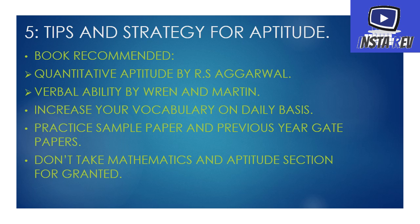For aptitude, the first important book for quantitative aptitude is R.S. Aggarwal. Go through previous year papers to get an idea, then pick up R.S. Aggarwal and start solving problems — do as many as you can. For the verbal section, study the Norman Martin book and solve last year's questions. For vocabulary, refer to Word Power Made Easy by Norman Lewis. You can also refer to GRE 350 High Frequency Words, which helps with antonym, synonym, and similar problems. Practice vocabulary daily, increase calculation speed, and don't leave aptitude and mathematics for last. Practice sample papers, previous year papers, and join online test series.